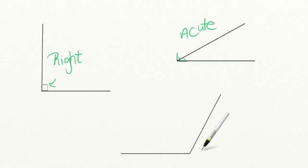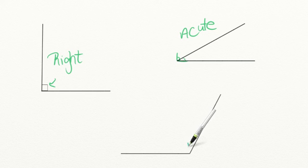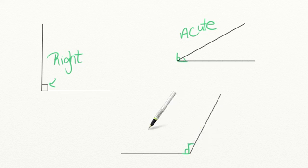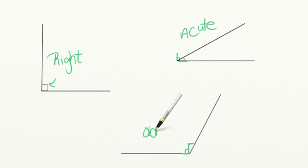Let's look at our last angle. Again, you want to draw a 90 degree angle in the corner just to make sure that you can compare. And since this angle is larger than 90 degrees, we know that this is an obtuse angle.